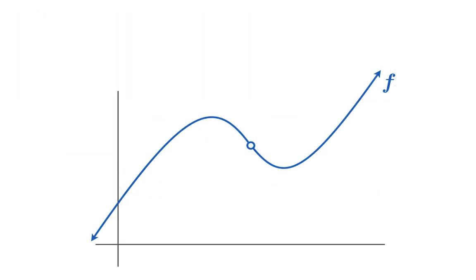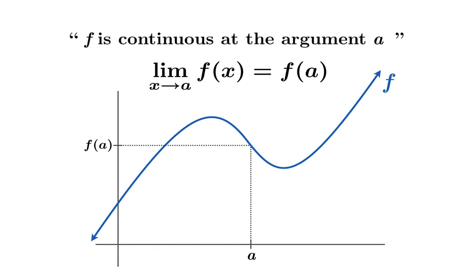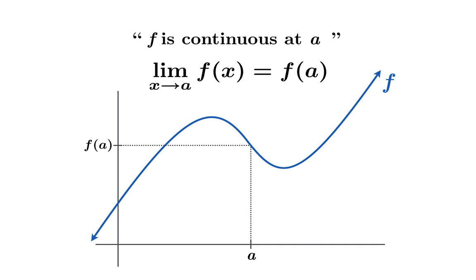So now it's time to learn about continuity. Suppose we have a function f and the limiting value as x approaches a of f of x is L. Suppose further that the function value at a happens to be L as well — in other words, the limiting value as x approaches a of f of x matches the value of f at a. When this happens, we say f is continuous at the argument a, or simply f is continuous at a.